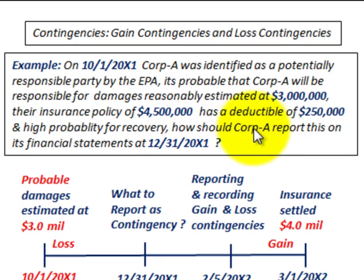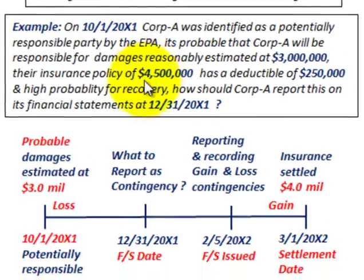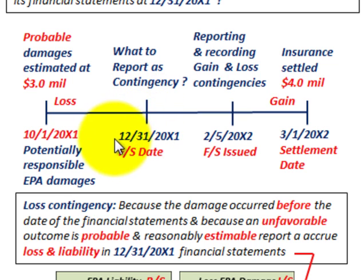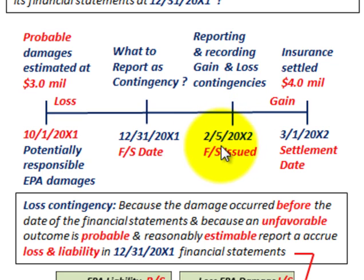The question is: how should Corporation A report this on its financial statements for 12-31-20X1? Setting up a timeline — the financial statement date is 12-31-20X1, representing the year 20X1. The financial statements won't be issued until 2-5-20X2, the following year. So 20X1 is what the financial statements represent, and 20X2 is when they are issued.